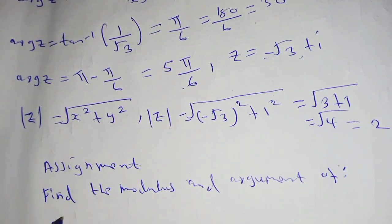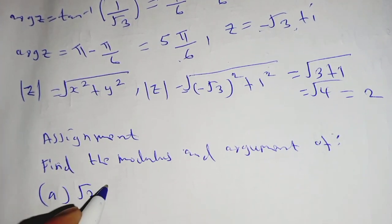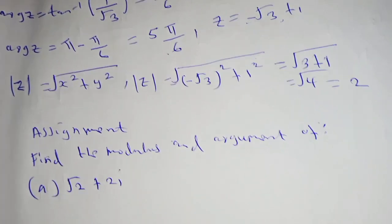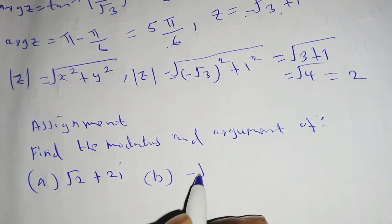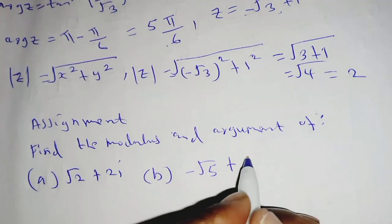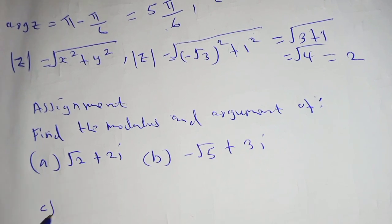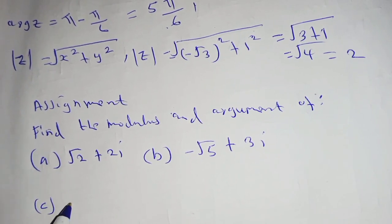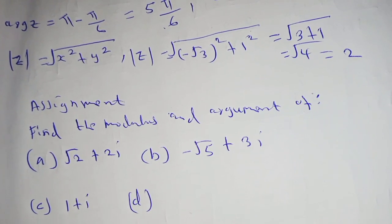(a) root 2 plus 2i, (b) negative root 5 plus 3i, (c) 1 plus i.